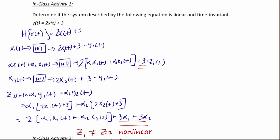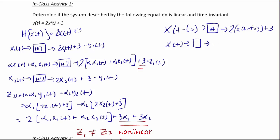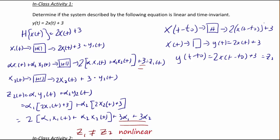Now let's check the system for time invariance. If the input x(t minus t_0) goes through our function, the output is 2 times x(t minus t_0) plus 3. Recall that when x(t) goes through the function, y(t) = 2x(t) + 3. So y(t minus t_0) means replacing every t with (t minus t_0), giving 2x(t minus t_0) + 3. Since this equals z1, we have z1 = z2, so this system is indeed time invariant.